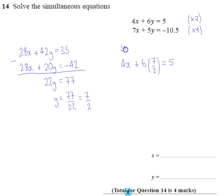So this is what I do. So I get 4x. 6 times 7 is 42, divide is 21, which is 21, equals 5. So 4x, take away, I get 21. 4x is minus 16. Divide by 4. X is minus 4.